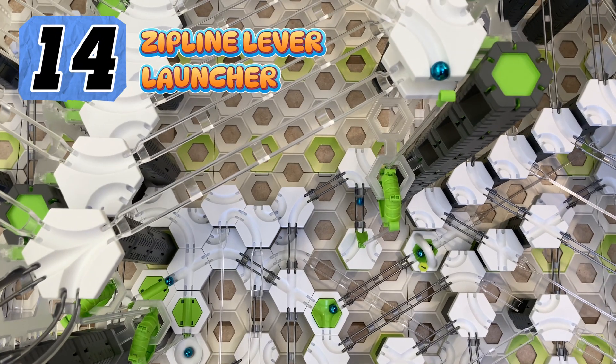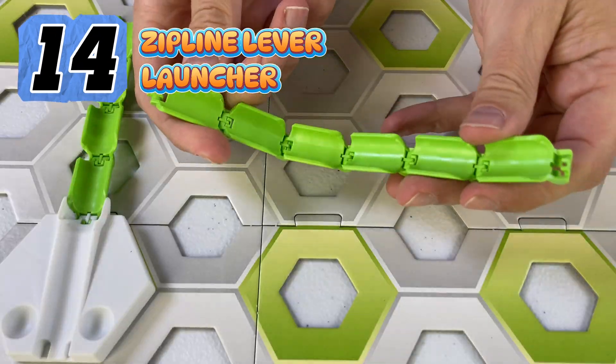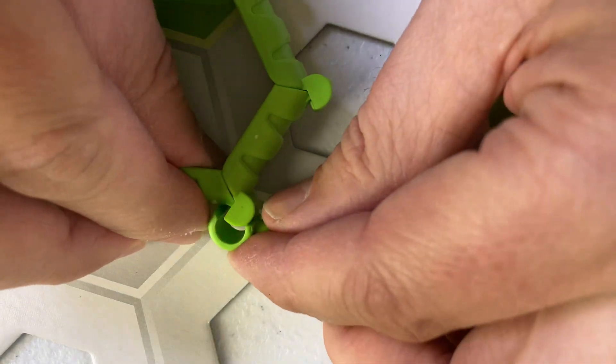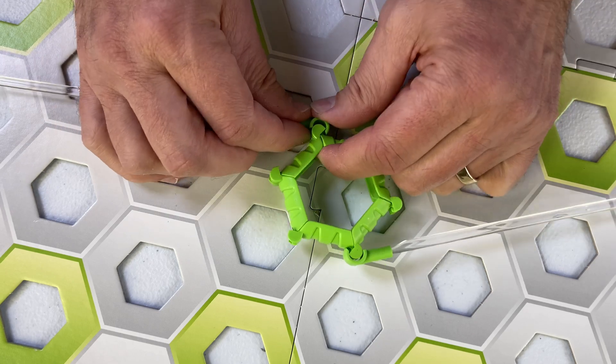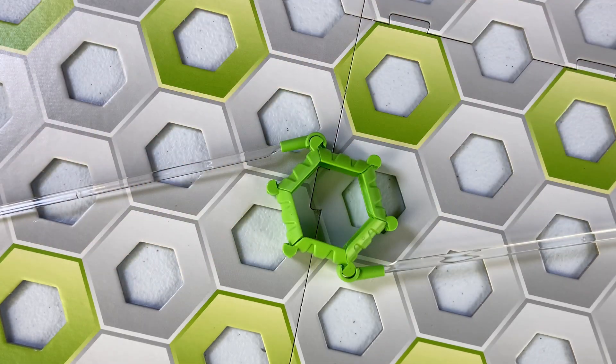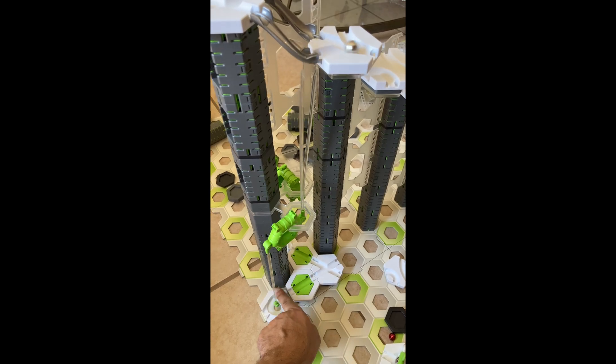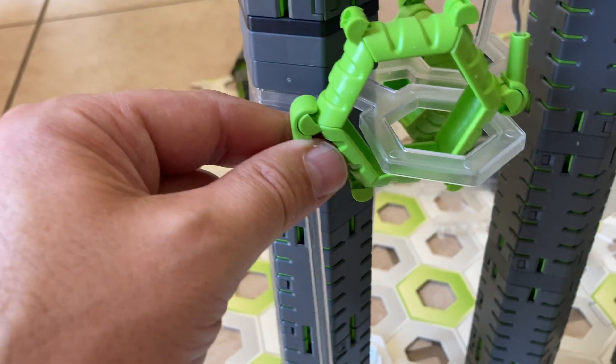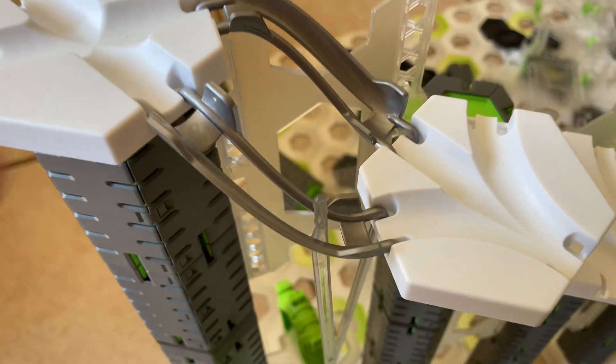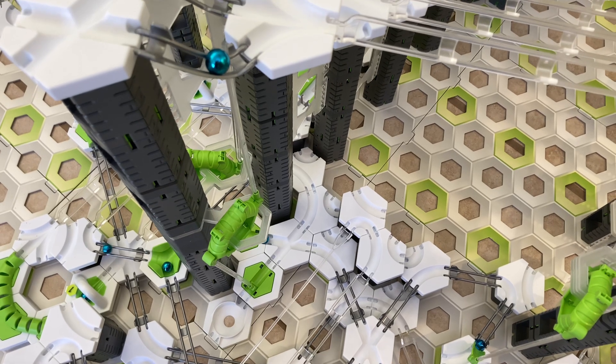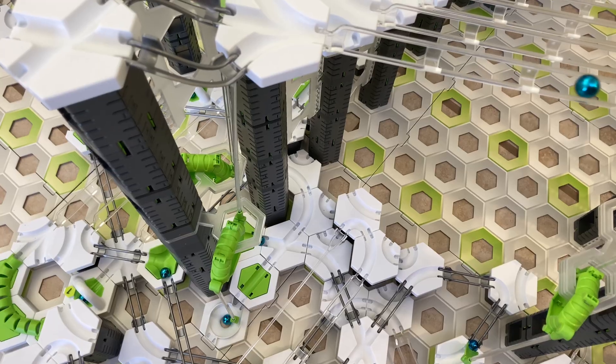Number 14 Zipline Lever Launcher. Make a ring out of GraviTrax bridge pieces and add two ziplines, one on each end. Now you have a lever that can be used to gain over 45 centimeters of height by launching marbles above. Use a lever in mousetrap mode by balancing the edge of the bridge ring on a double balcony. A marble below pushes the bridge off the platform, dropping it to release a marble that is sitting on a short Bernoulli rail.